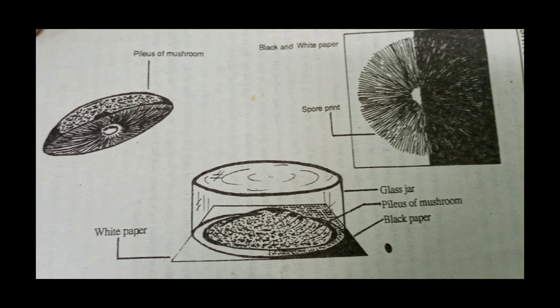For this, cut off the stripe just below the pileus. Place the pileus on paper — white paper is normally used, although black paper can also be used. The virtue of using glass instead of paper is that the glass can be held against a light or dark background and the color of the spores determined more easily. If you suspect the spores are white or light in color, place the pileus so that half is on white paper and half on black paper.